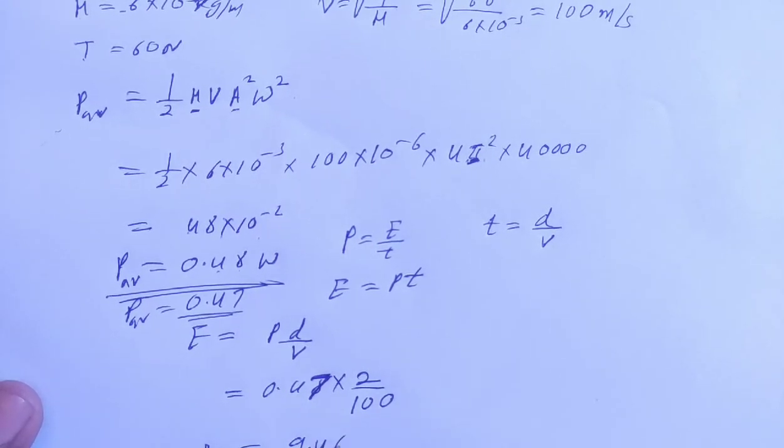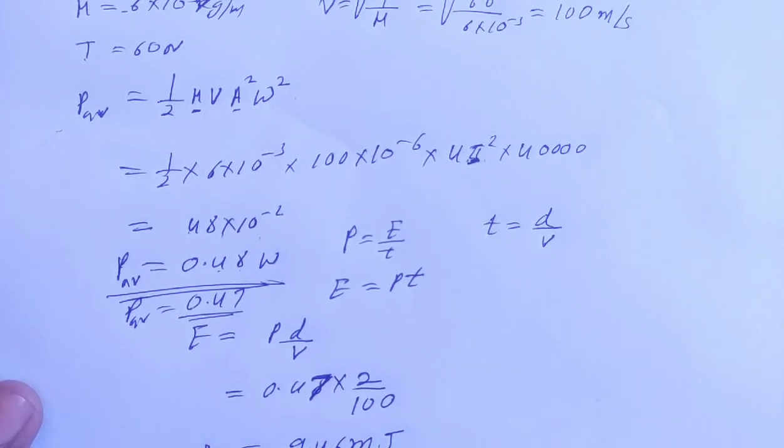9.46 millijoule. 10 to power minus 3 is millijoule.